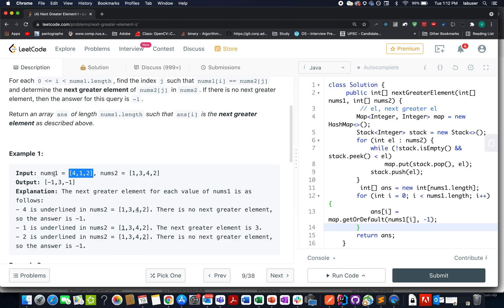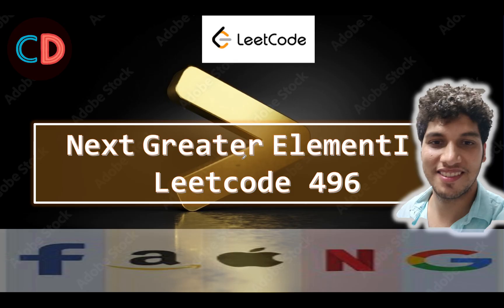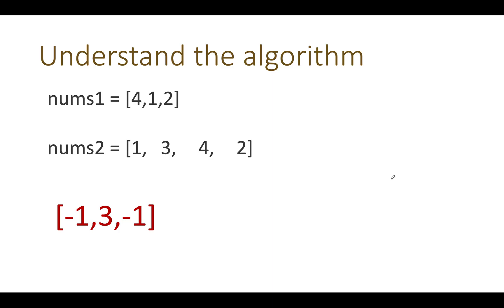Now let's look at the presentation. Next Greater Element One — LeetCode 496. Let's take the same example from the question and reiterate it for better understanding. This is the nums1 input array and this is the nums2 input array. For each element that exists in nums1, we need to search for the corresponding next higher element in nums2.